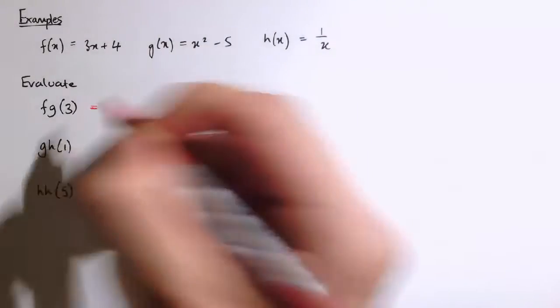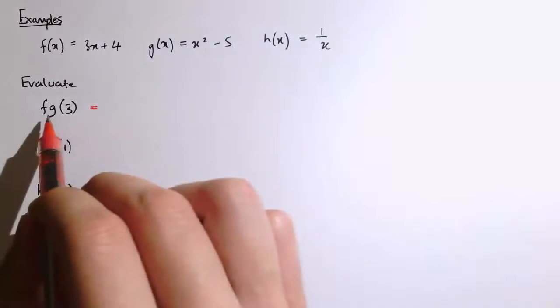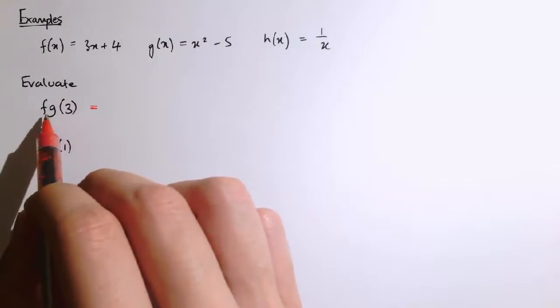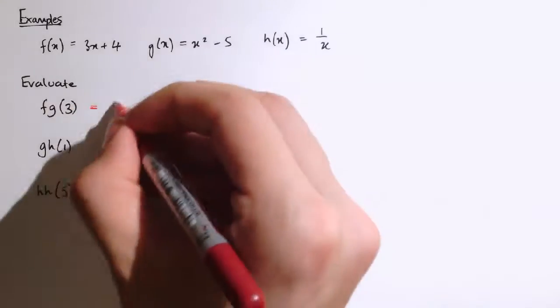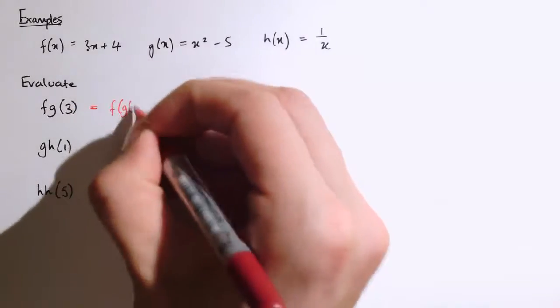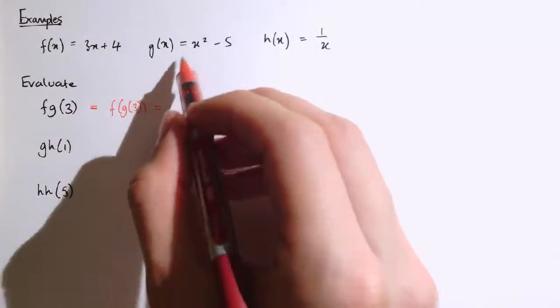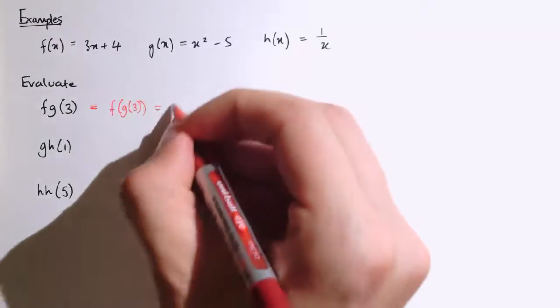So let's look at this then, fg of 3. Now remember, well, not remember, but this function is f of g of 3, so by the way, if we've just written these down, this actually means f of g of 3, so we're going to do g first. g of 3 is 3 squared minus 5.